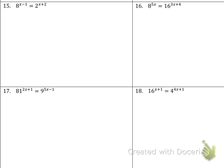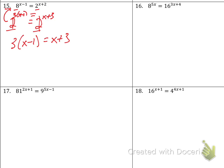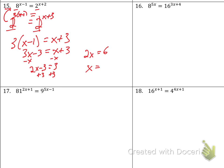Two more. It looks like I only have a base of 2. I'm going to keep my right-hand side the same. The base on the left has to be 2 as well. So 2 to what power is equal to 8? That's 2 to the third power. I just bring my exponents down. Now these bases cross out and I can set the exponents equal: 3 times the quantity x minus 1 is equal to x plus 3. Distributing: 3x minus 3 equals x plus 3. Minus the x: 2x minus 3 equals 3. Add 3: 2x equals 6. Divide by 2, so x equals 3.